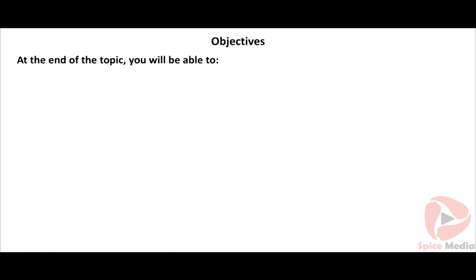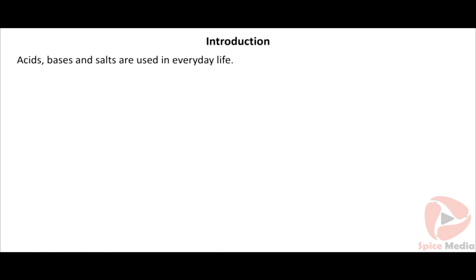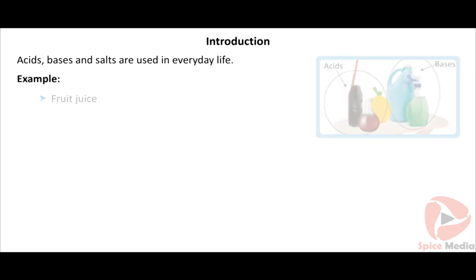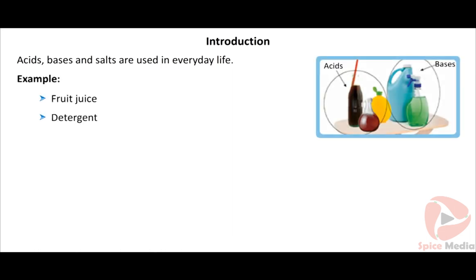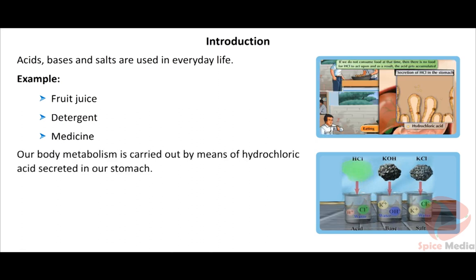At the end of this topic you will be able to describe the properties of acids, list out the sources of acids, state the uses of acids, and explain the reactions with acids. Acids, bases, and salts are used in everyday life — for example, fruit juice, detergent, and medicine. They play a key role in our day-to-day activities. Our body metabolism is carried out by means of hydrochloric acid secreted in our stomach.